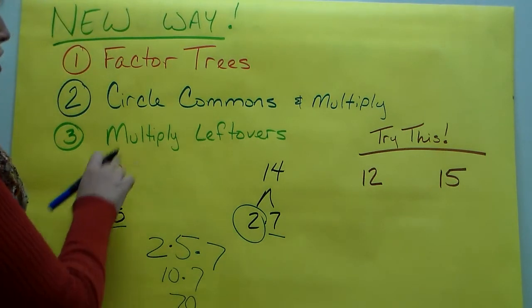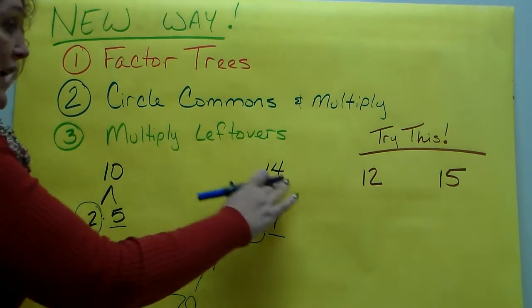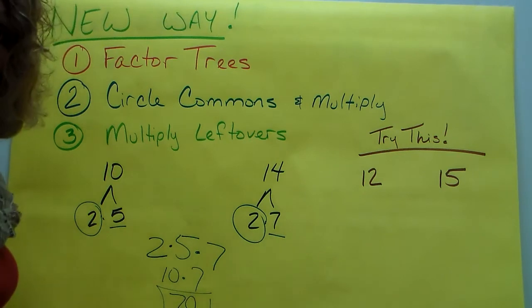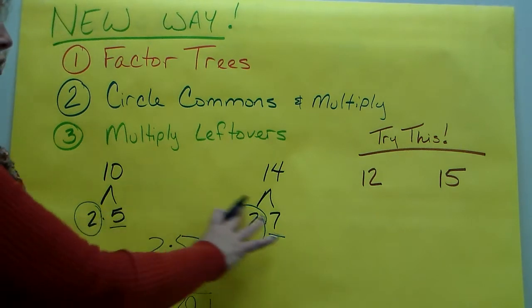So the least common multiple of 10 and 14 is 70. And you didn't have to write them all down. You just had to keep track of your stuff.